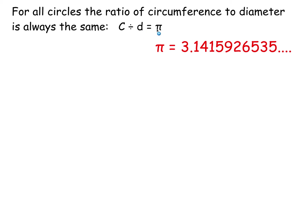We can rearrange that formula. Instead of writing C divided by d equals pi, we can rearrange it and say C equals pi times d. The circumference is pi times the diameter. Approximately 3.14 is usually good enough.